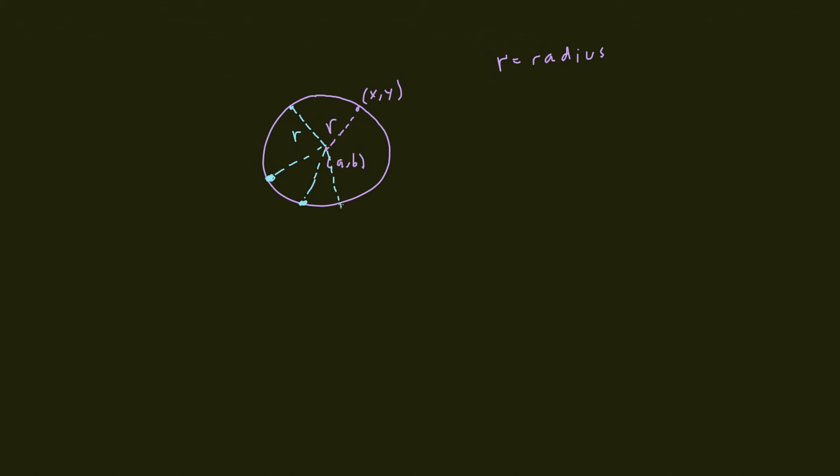It's just describing the distance from the center to the edge of the circle. So this means that all of these are the radius of the circle, right? So that means that they're all the same. They all have the same distance.